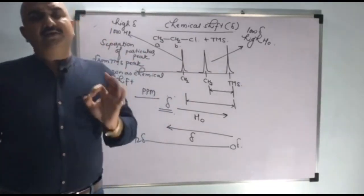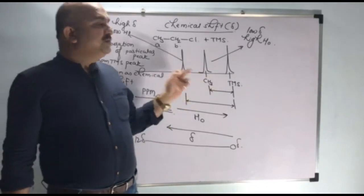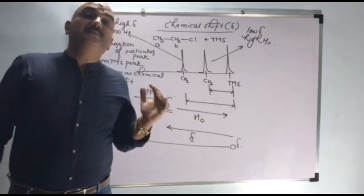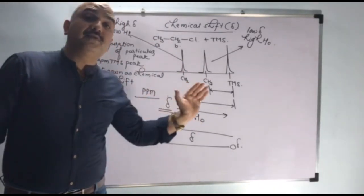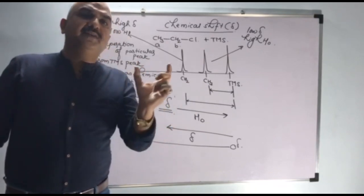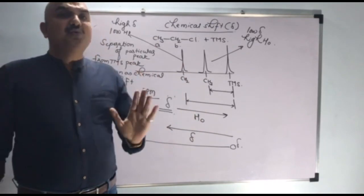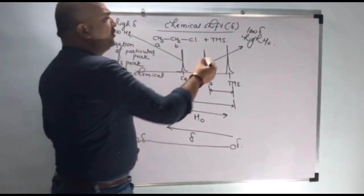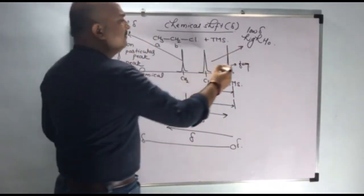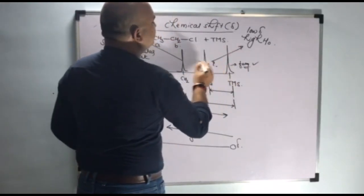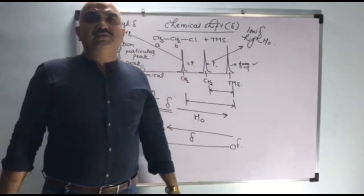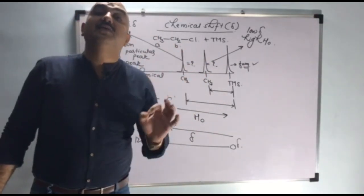Many people say the distance of a particular peak from the TMS peak — that is wrong. It is not distance, it is separation. Separation of a particular peak from the TMS peak is known as chemical shift. In our instrument, we know the frequency due to each peak, and by taking the advantage of frequency, we can calculate the value of delta.